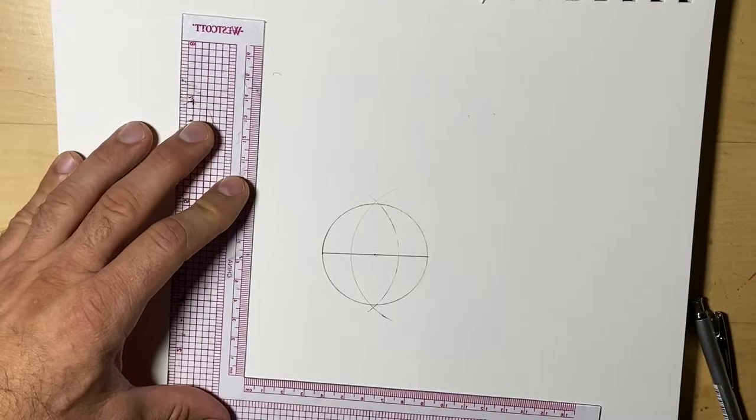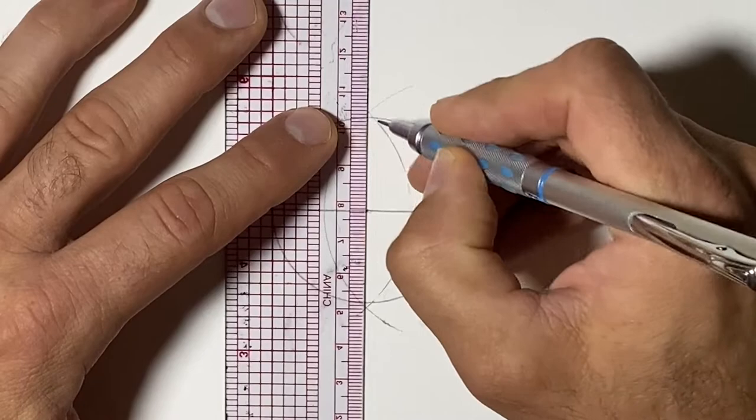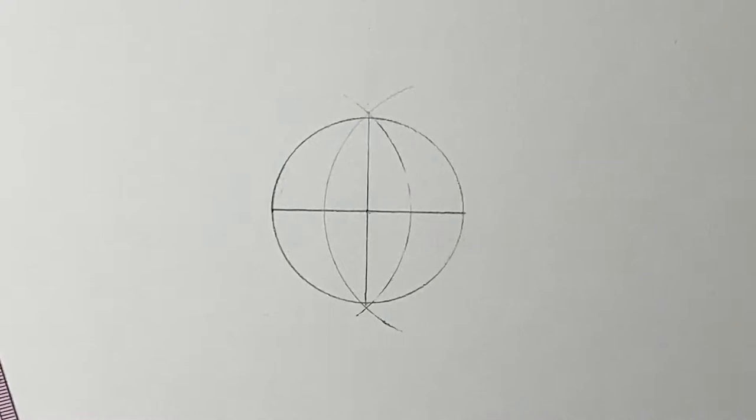So when we line up these two points here and here, we're going to be able to find the bisecting line or make a 90-degree perpendicular line to the original first line.